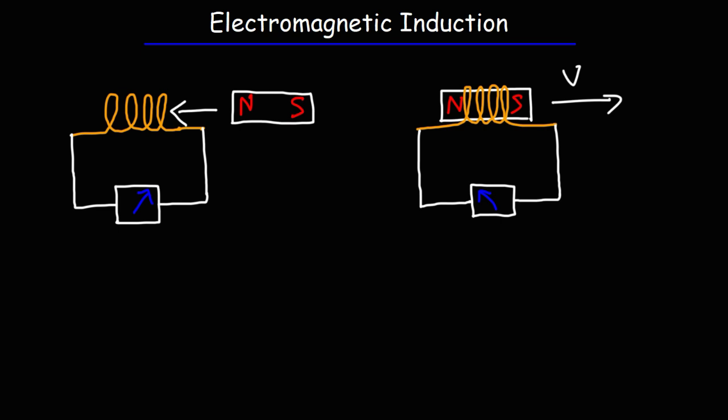Electromagnetic induction is used in magnetism to induce a current in a coil. The amount of current that is induced depends on a variety of factors. One is how fast the magnetic flux is changing. The magnetic flux is equal to the strength of the magnetic field times the area. So if you change the area of the coil, you can also change the flux flowing through it. Any time there's a change in flux, there's going to be an induced current in the circuit.